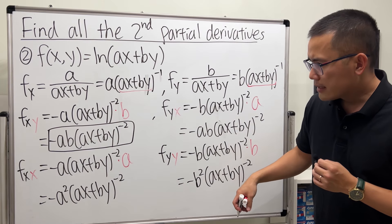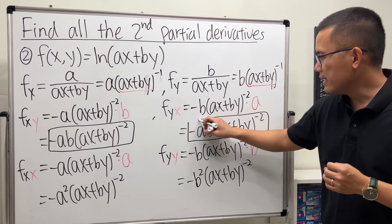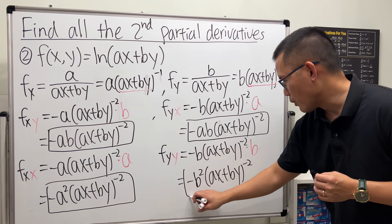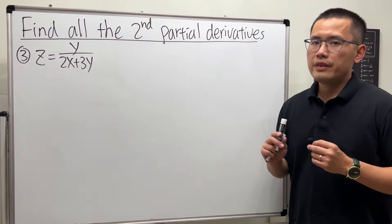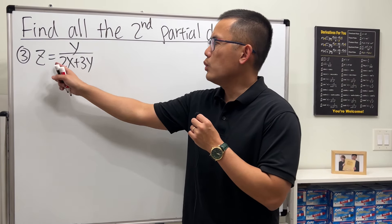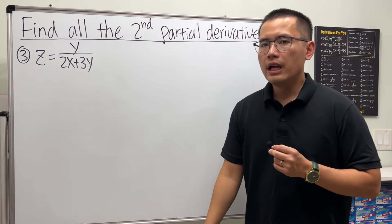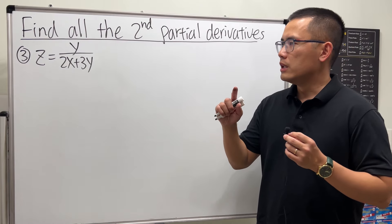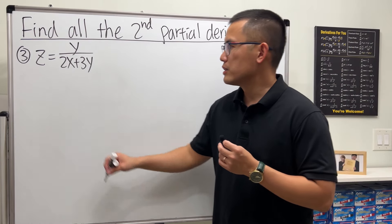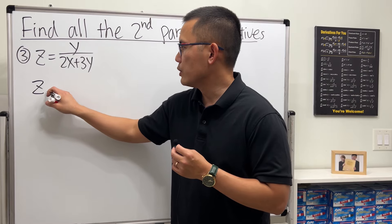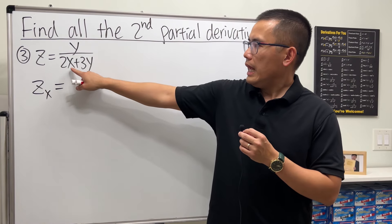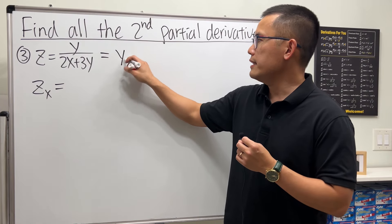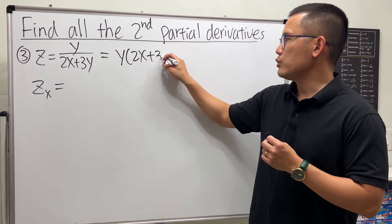So fxy equals fyx, and we also have fxx and fyy. For the third example, z equals y over (2x + 3y). Let's focus on doing the partial with respect to x first, then we will do zxy and also zxx. Since x only appears in the denominator, it's easier to rewrite the function as y times (2x + 3y) to the negative one power.